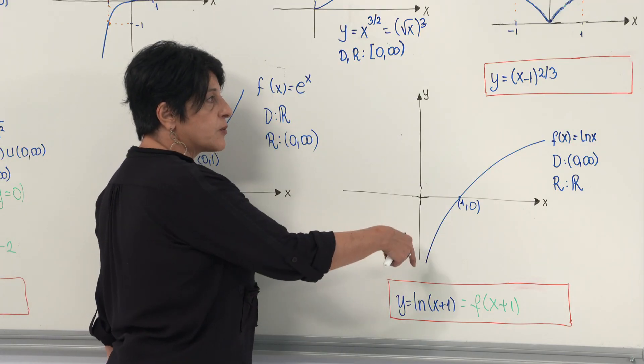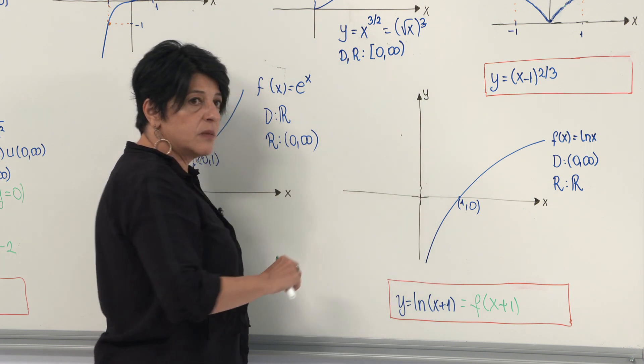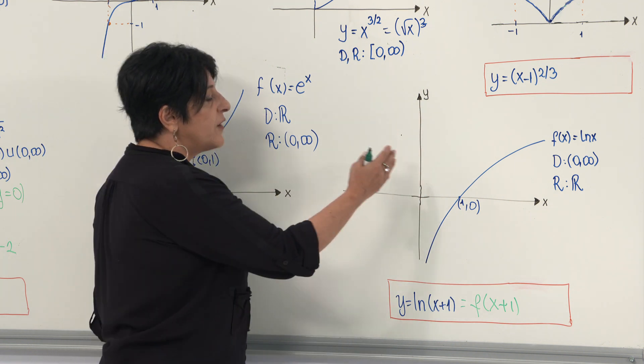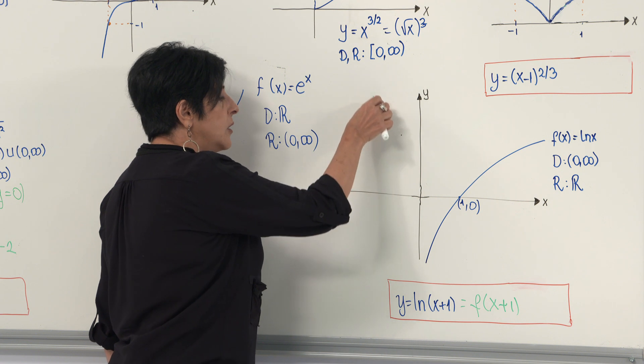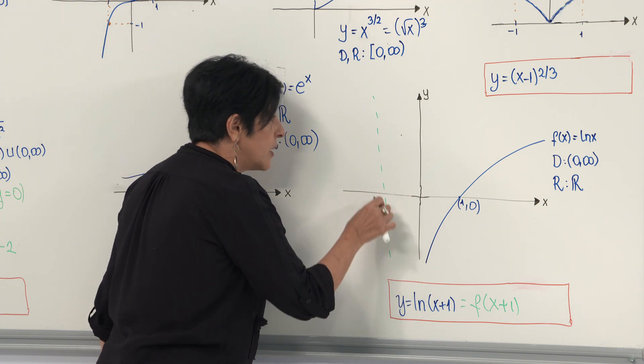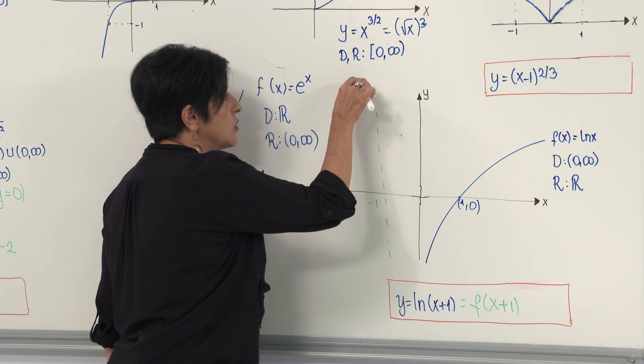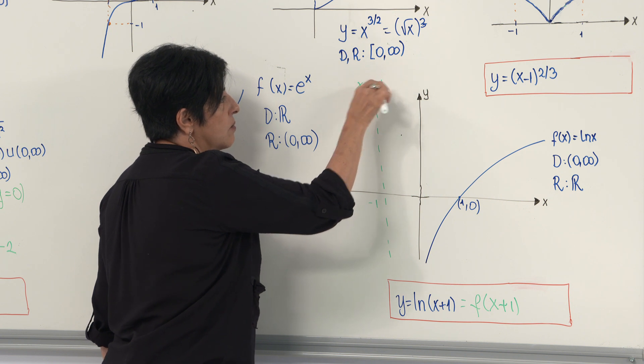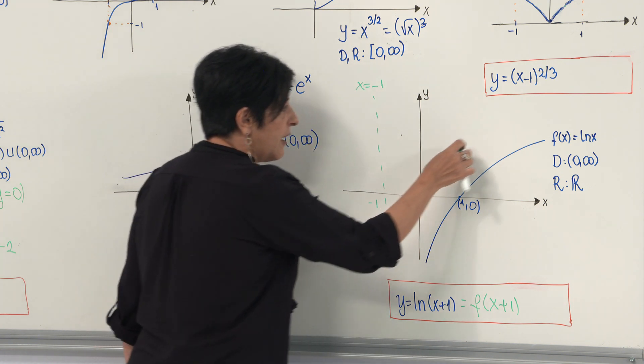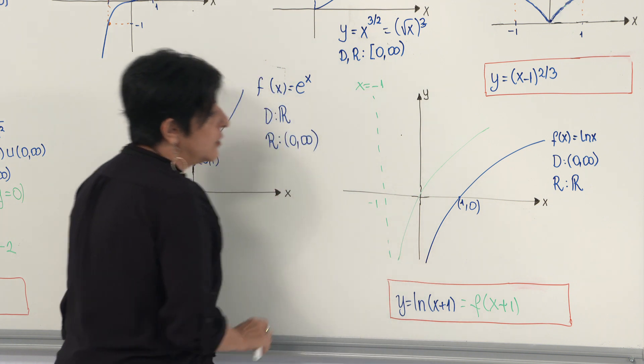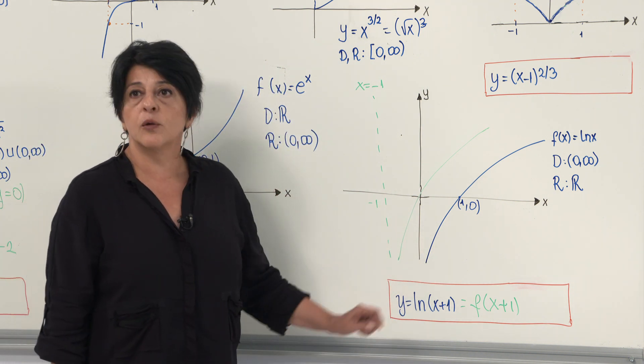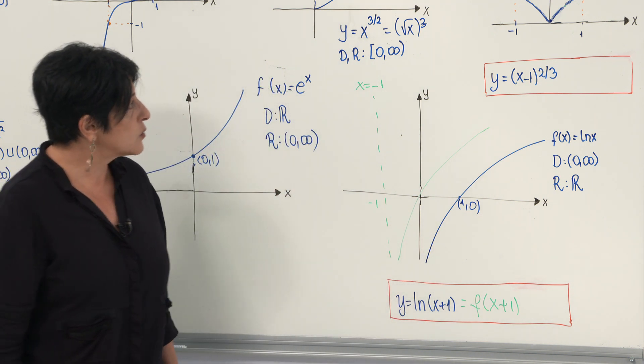Now, remember the natural logarithmic function has a vertical asymptote. And if I shift it left by one unit, it will come to this point, and your new vertical asymptote will be x equals minus 1. And when you shift the graph, you will obtain the graph of y equals ln(x plus 1).